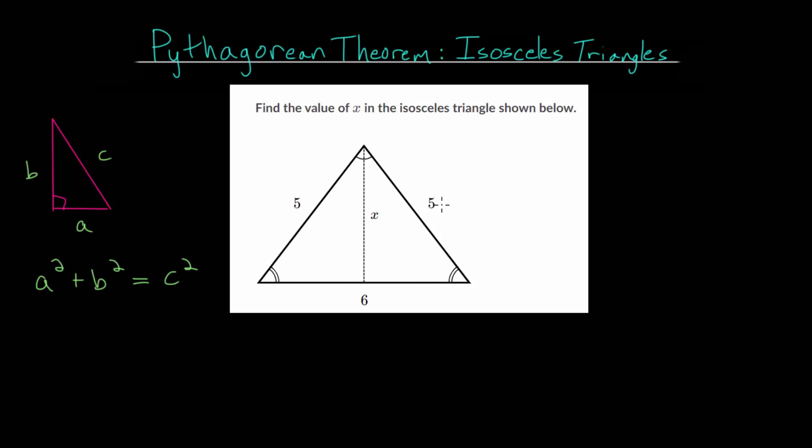Now the main idea with this problem is that this vertical line essentially splits the triangle into two congruent right triangles. So this is going to split at a right angle, and this side length here and this side length here are equal to each other.